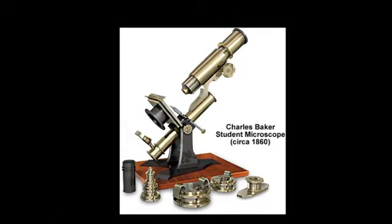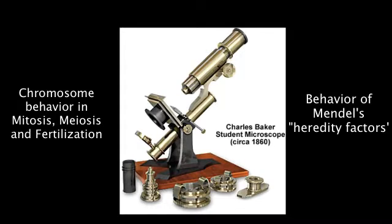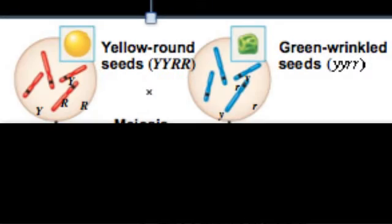In the late 1800s, many improvements in microscopy helped scientists work out the process of mitosis and meiosis. With the discovery of chromosomes and the process of mitosis, meiosis and fertilization, scientists quickly drew parallels between what they saw in chromosome behavior and the behavior of Mendel's heredity factors.